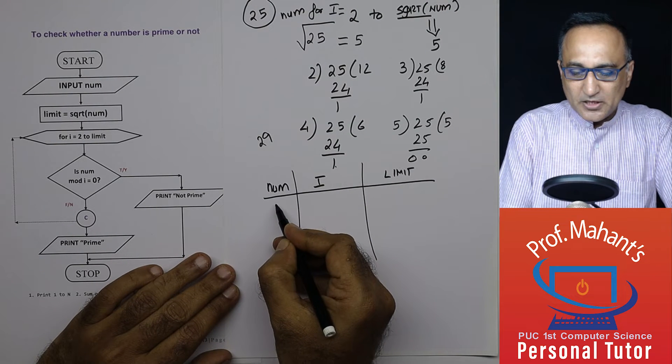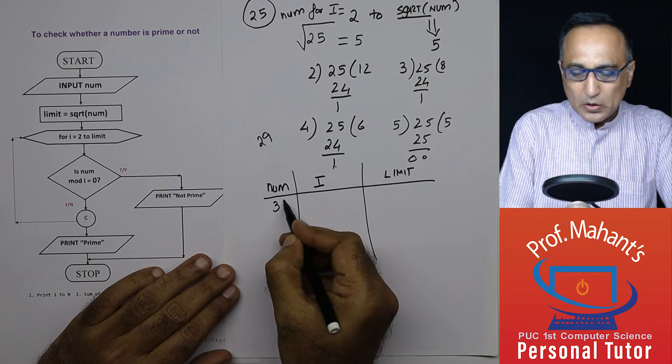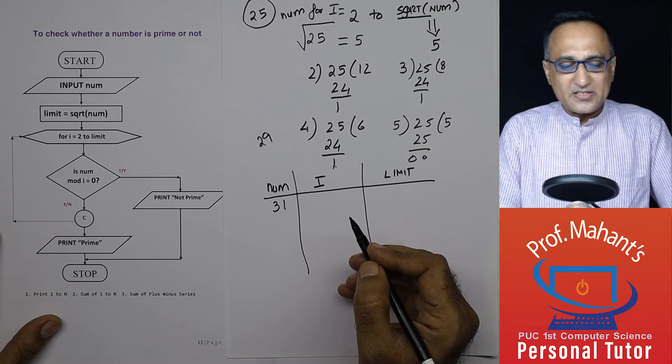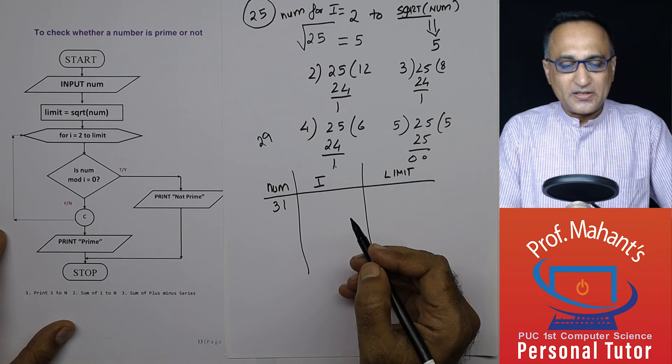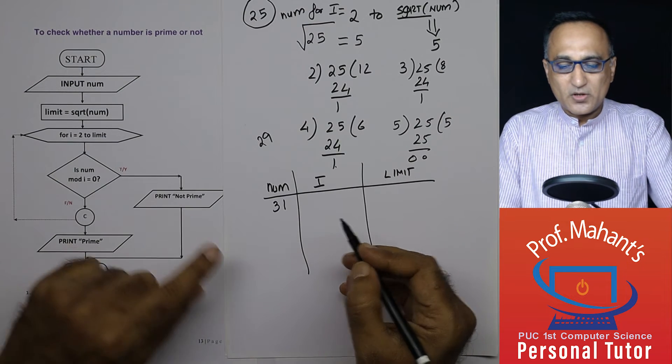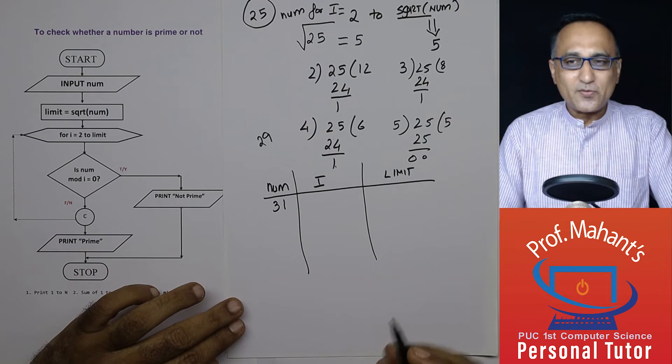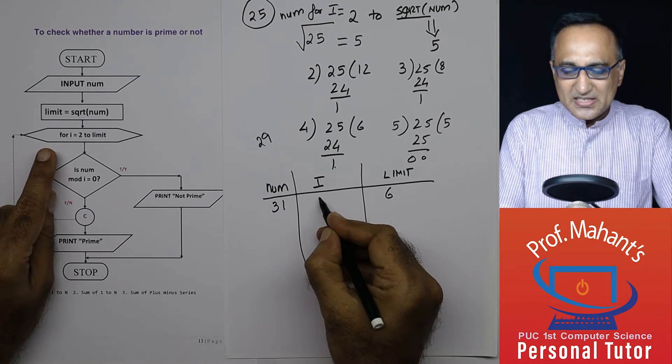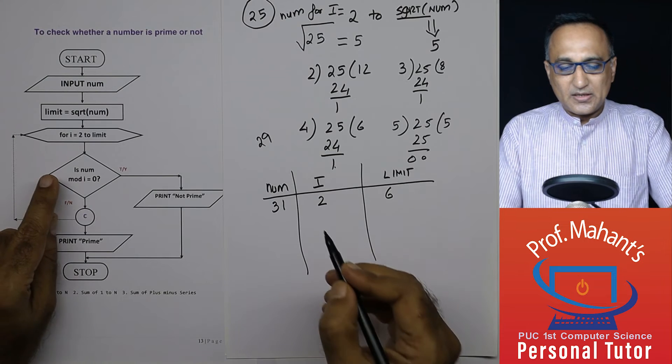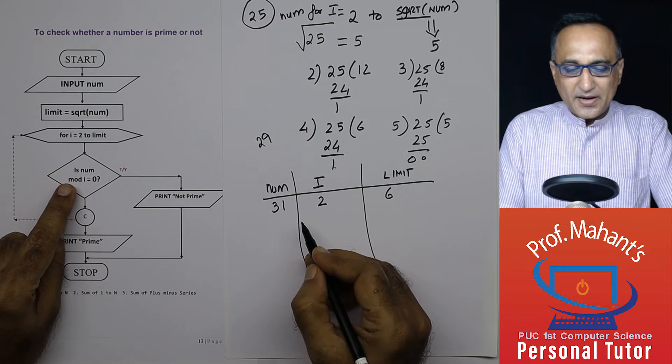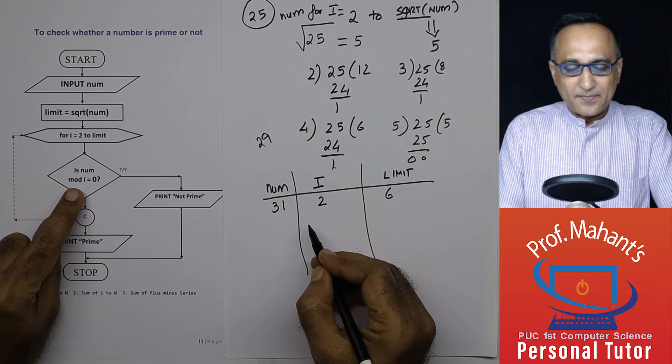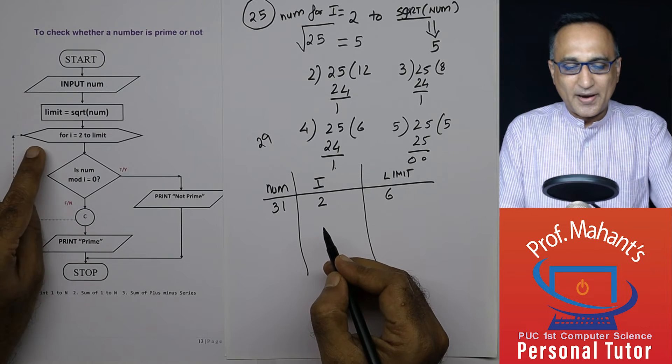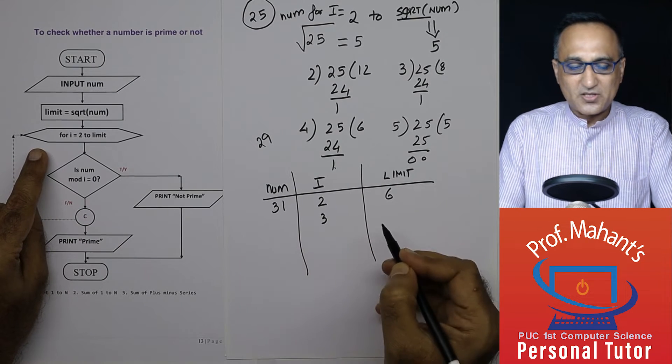Let's assume the input number is 31. Limit is equal to square root of the number. What is 31? Square root of 31 is approximately 6. Now I start with i is equal to 2. 31 divided by 2, the remainder is 1. So this condition fails. It is false. I go back here. i becomes 3.